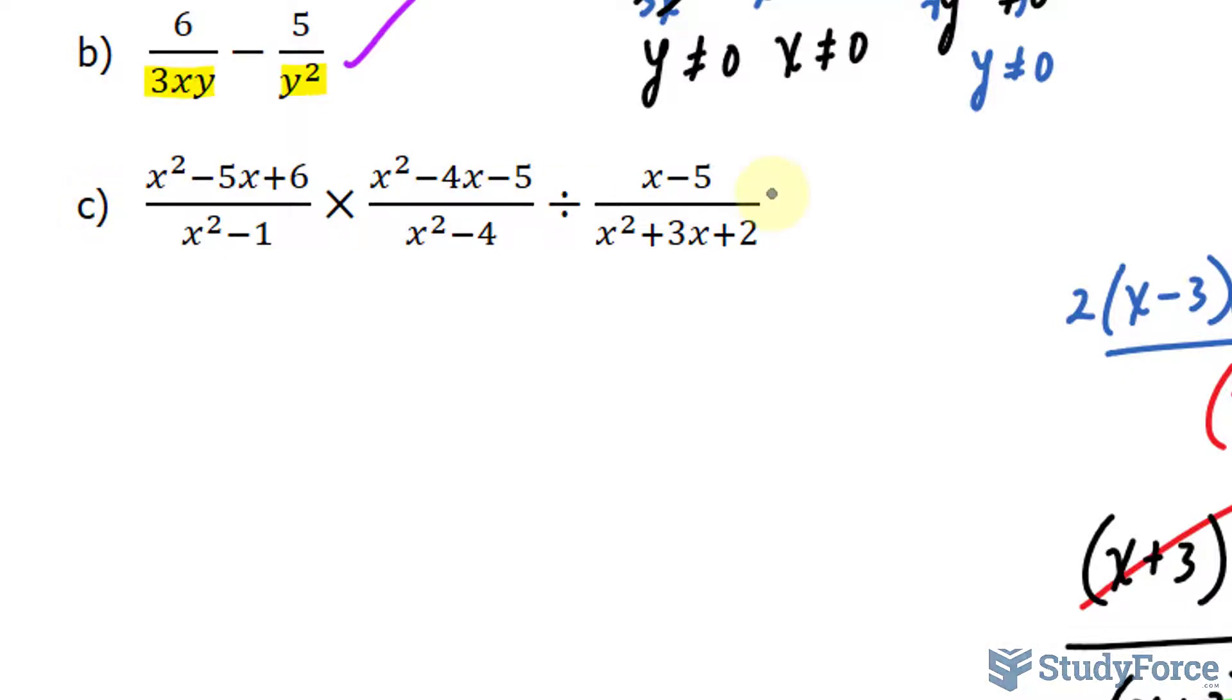Now, for question c, this one's way more complicated than the previous two. This denominator cannot equal 0, and it is a difference of squares. Just keep that in mind for later. So if I solve for x by bringing that over, I end up with this step, and then I square root both sides where I get x cannot equal both plus or minus 1.